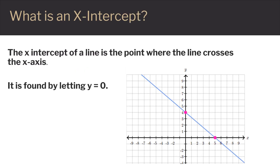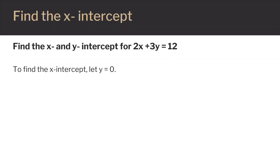What is an x-intercept? The x-intercept of a line is the point where the line crosses the x-axis. We find it by letting y equal 0. Suppose we have the equation 2x plus 3y equals 12 and we want to find the x-intercept.